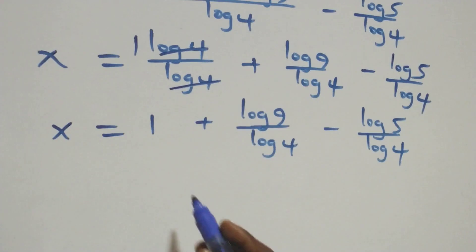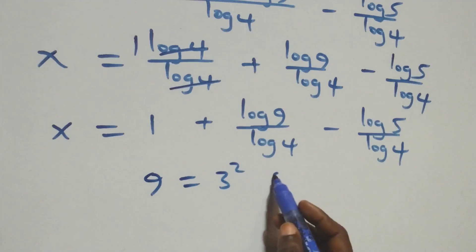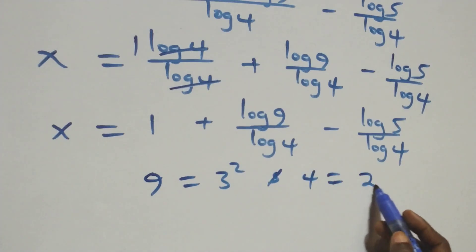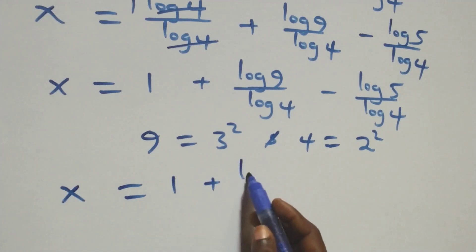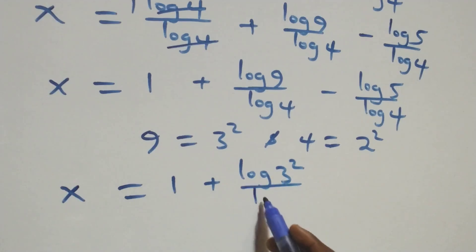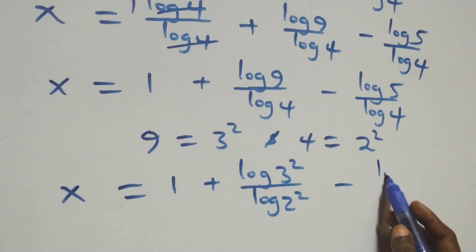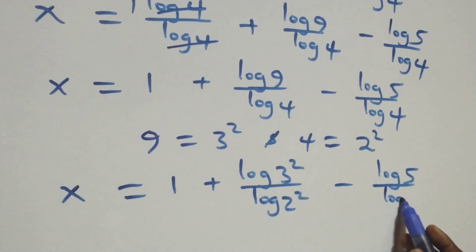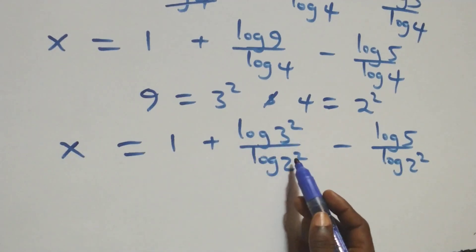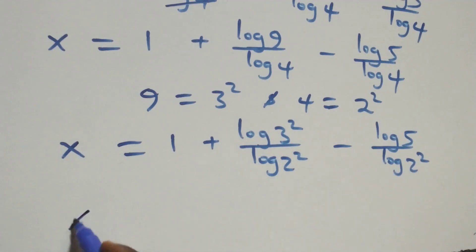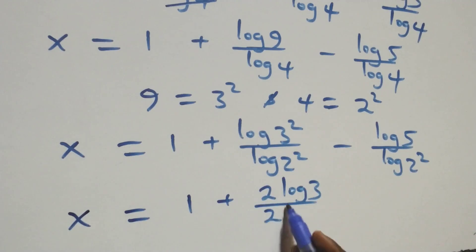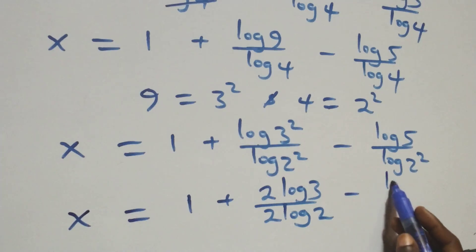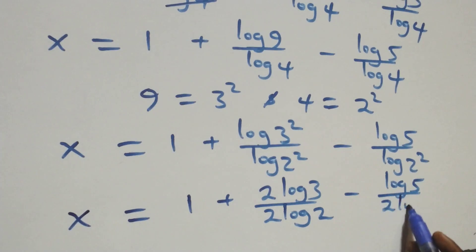Next step: 9 can be written as 3 times 3, which is 3 squared, and 4 can be written as 2 times 2, which is 2 squared. So what we have becomes x equals 1 plus log(3 squared) over log(2 squared), minus log 5 over log(2 squared). We apply the power rule of logarithms, bringing the 2s down, and we have x equals 1 plus 2 log 3 over 2 log 2, minus log 5 over 2 log 2.